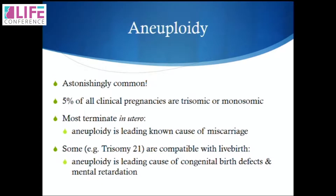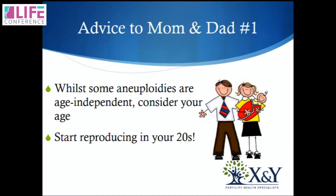Aneuploidy is astonishingly common: 5% of all clinical pregnancies are trisomic or monosomic. Most terminate in utero, and aneuploidy is the leading known cause of miscarriage. Some trisomies such as Down's are compatible with life, but aneuploidies are the leading causes of congenital health defects and mental retardation. So the first advice I'm going to give mum and dad is: while some aneuploidies are age-independent, do consider your age. Start reproducing in your 20s if you can, and do freeze those eggs.